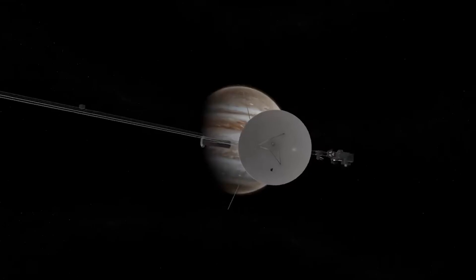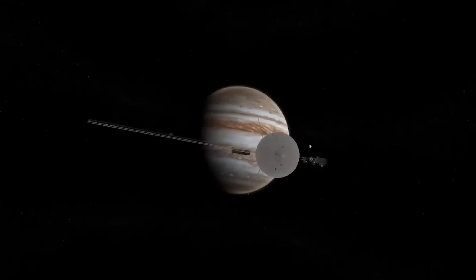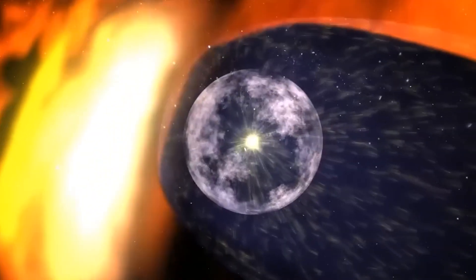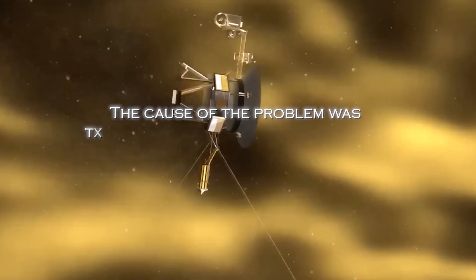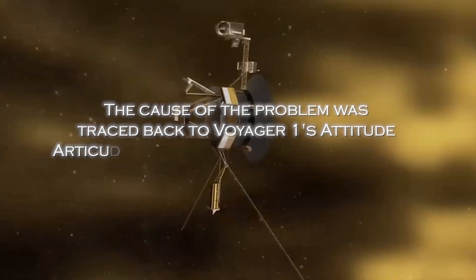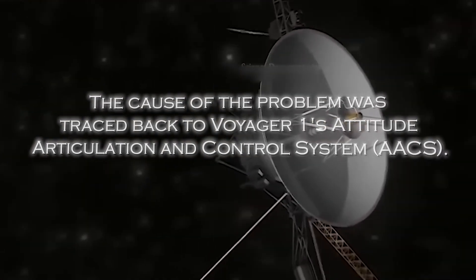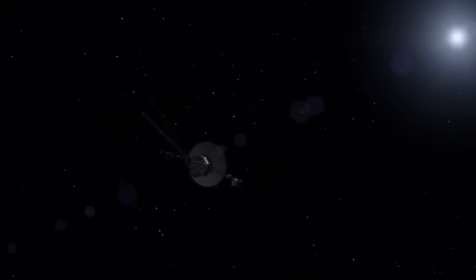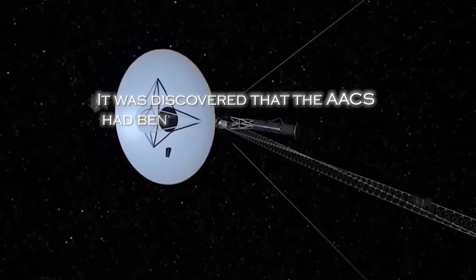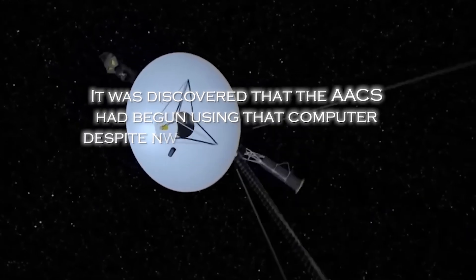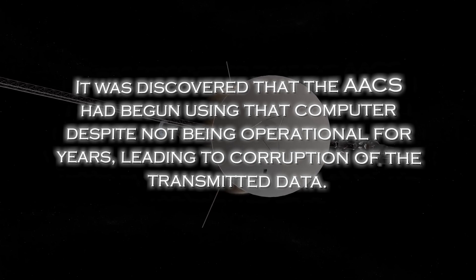After months of receiving encrypted data from the spacecraft, scientists and engineers were finally able to restore clarity and reliability to the information coming from the far reaches of interstellar space. The cause of the problem was traced back to Voyager 1's Attitude Articulation and Control System, or AACS, especially an onboard computer that was supposed to be inactive. Surprisingly, it was discovered that the AACS had begun using the computer despite not being operational for years, leading to corruption of the transmitted data.